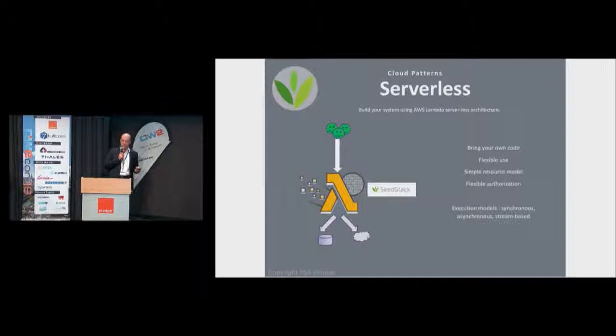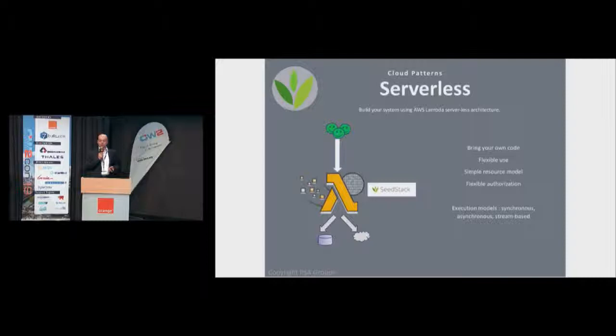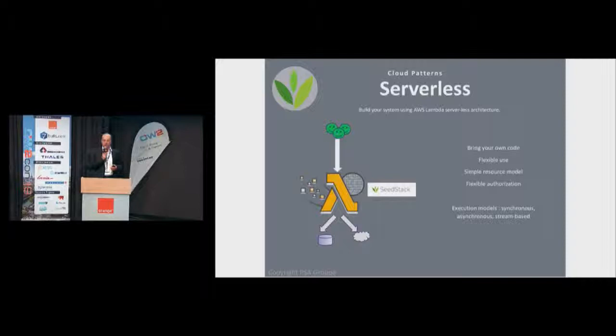The last example is about serverless, which is a work in progress for us. We integrated Lambda support in our packages — we are able to create Lambdas and deploy directly to the cloud, Amazon especially. You can take your code, put it inside a Lambda, and deploy it, which is flexible to use. We have a simple resource model with flexible authorization, and you can use execution models like synchronous, asynchronous, and stream-based. The work in progress is around how to integrate the other components from the public cloud ecosystem.